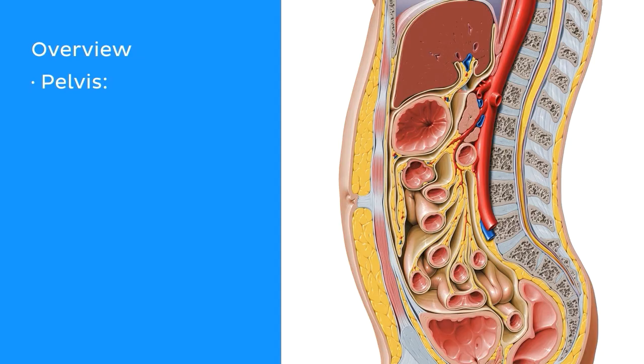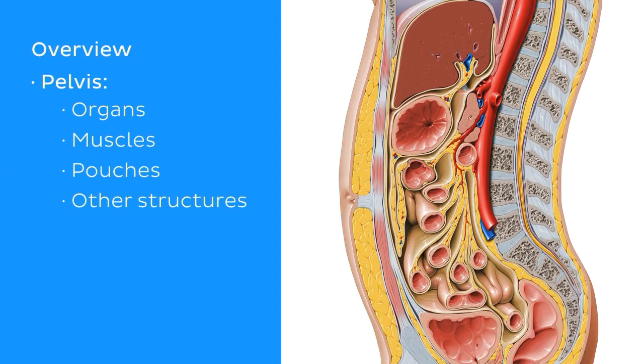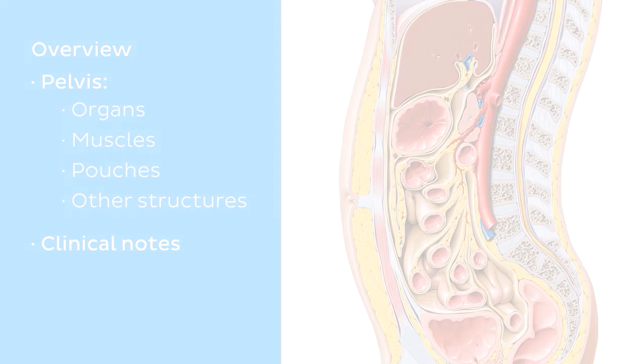In the pelvis, we're going to be looking at the organs, the muscles, the pouches, and some other structures. And finally, we'll discuss the clinical significance of the peritoneum.